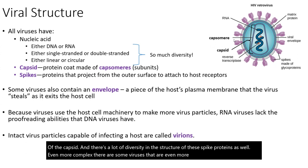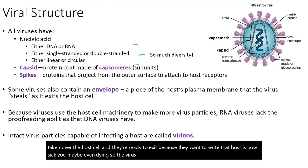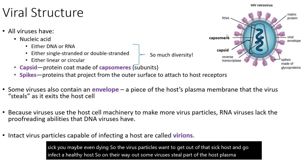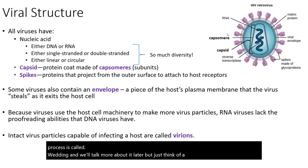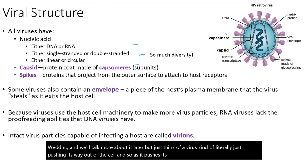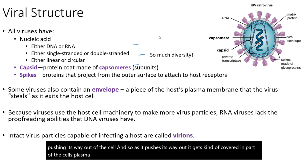Even more complex, there are some viruses that are even more sophisticated. Once they've taken over the host cell and they're ready to exit — because that host is now sick, maybe even dying — the virus particles want to get out and go infect a healthy host. So on their way out, some viruses steal part of the host plasma membrane, a process called budding. Think of a virus literally pushing its way out of the cell and getting covered in part of the cell's plasma membrane.